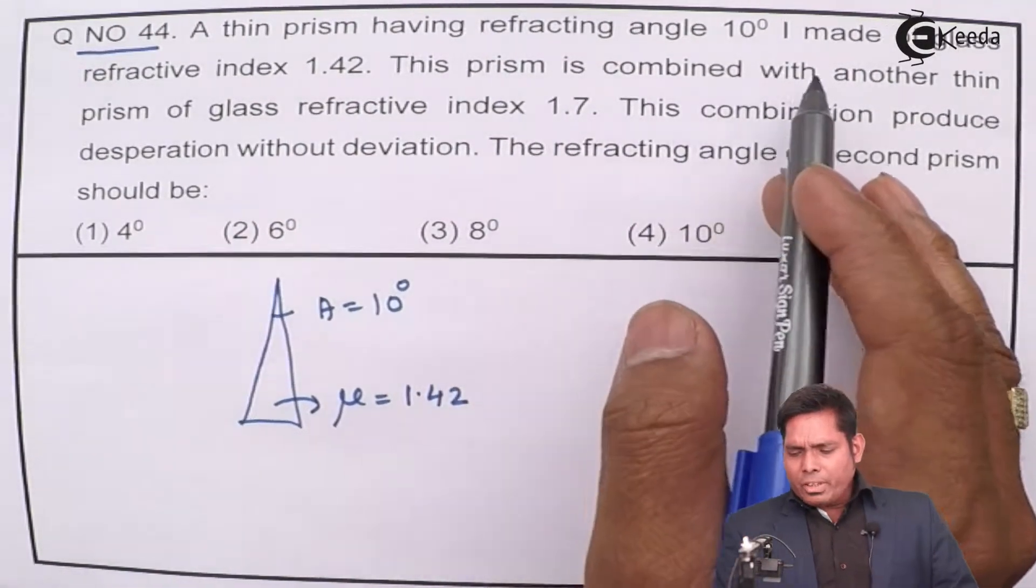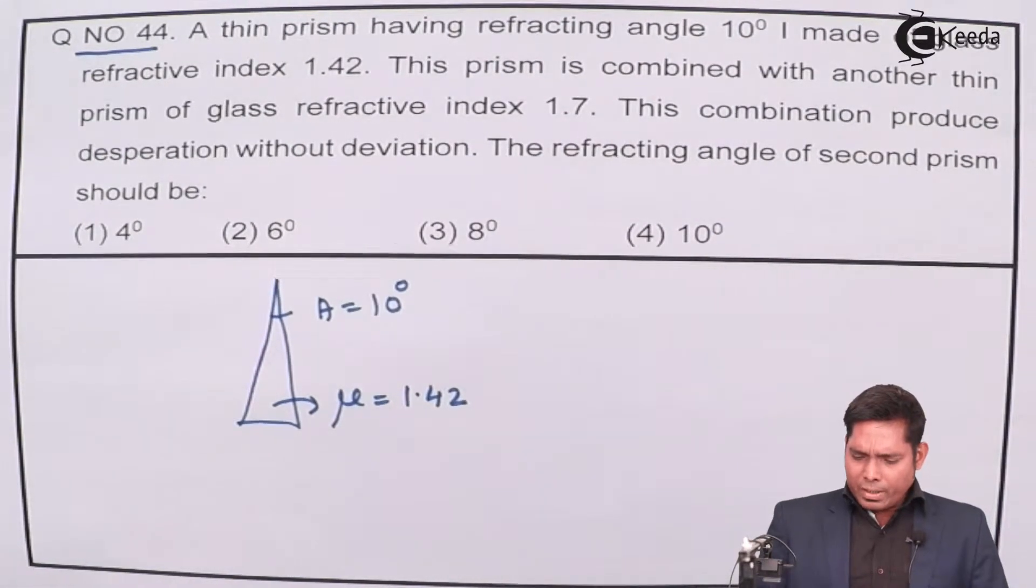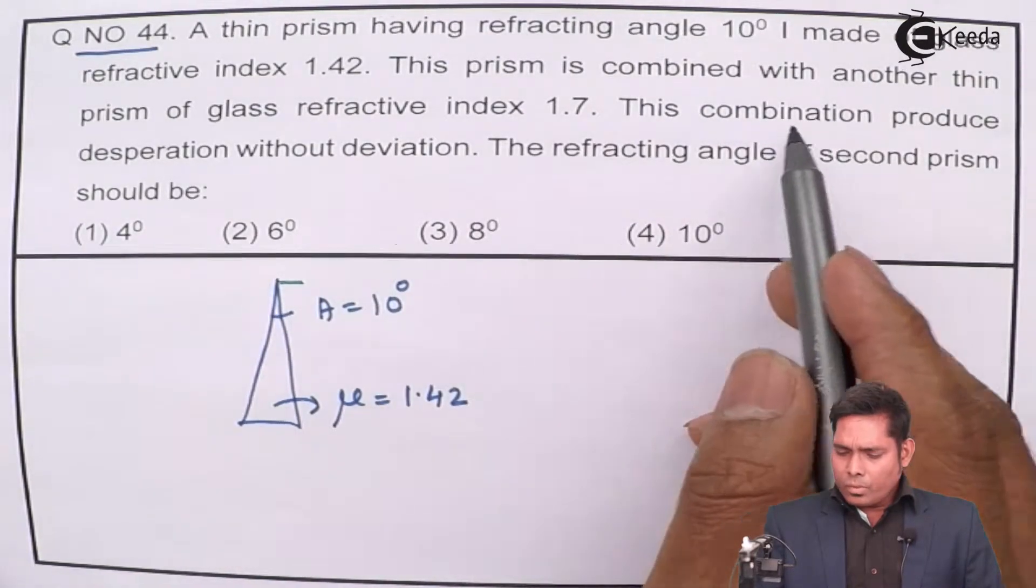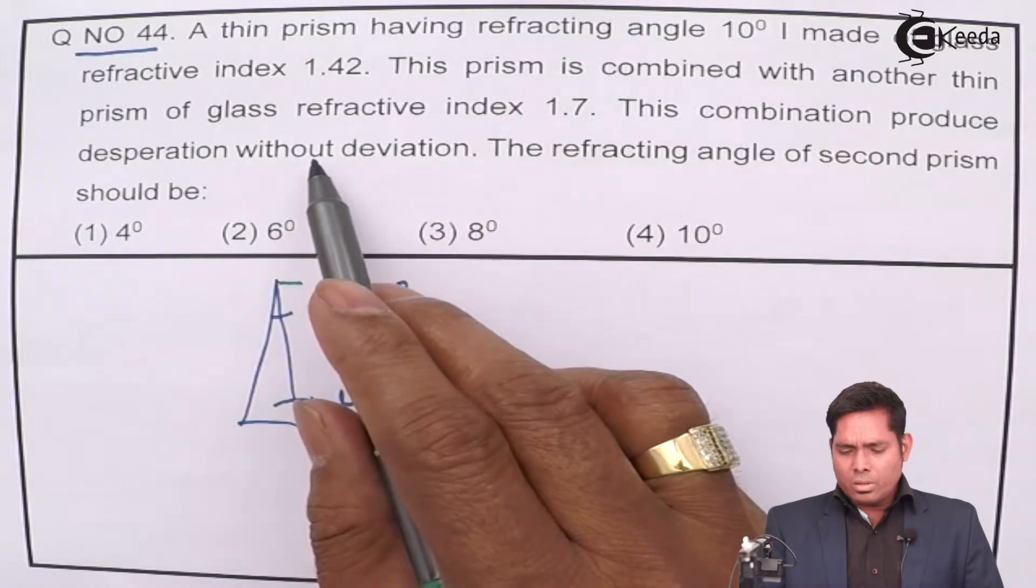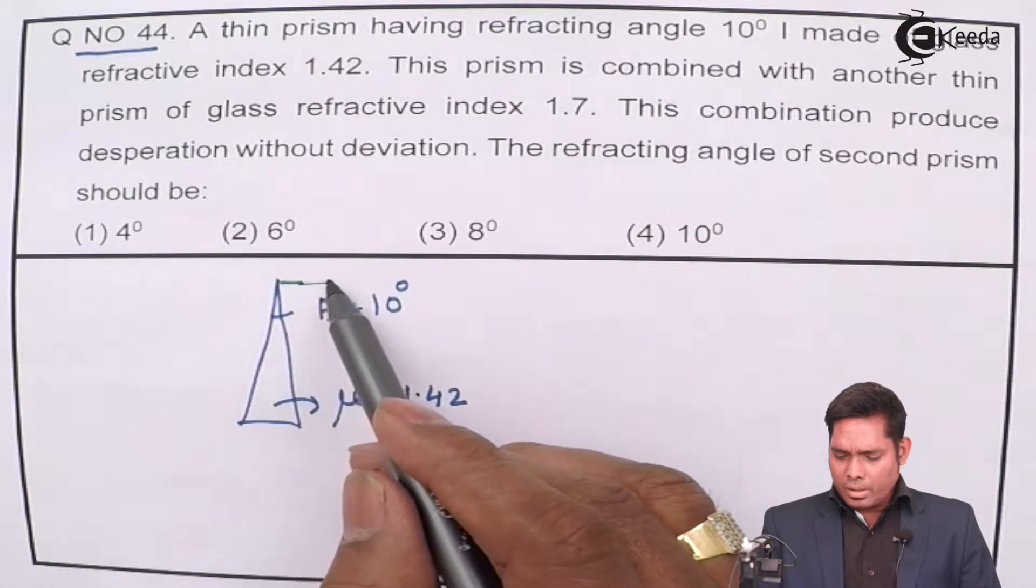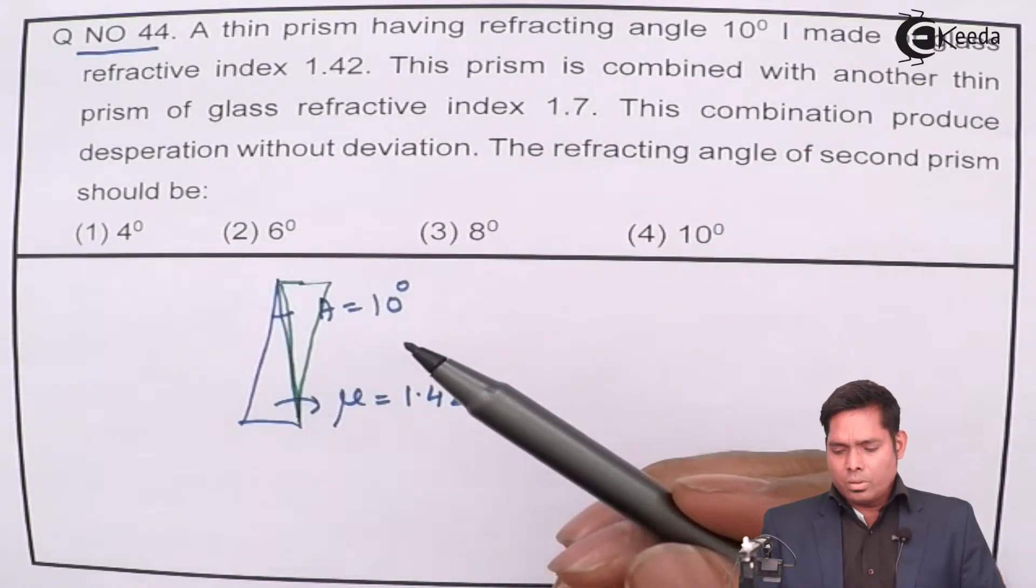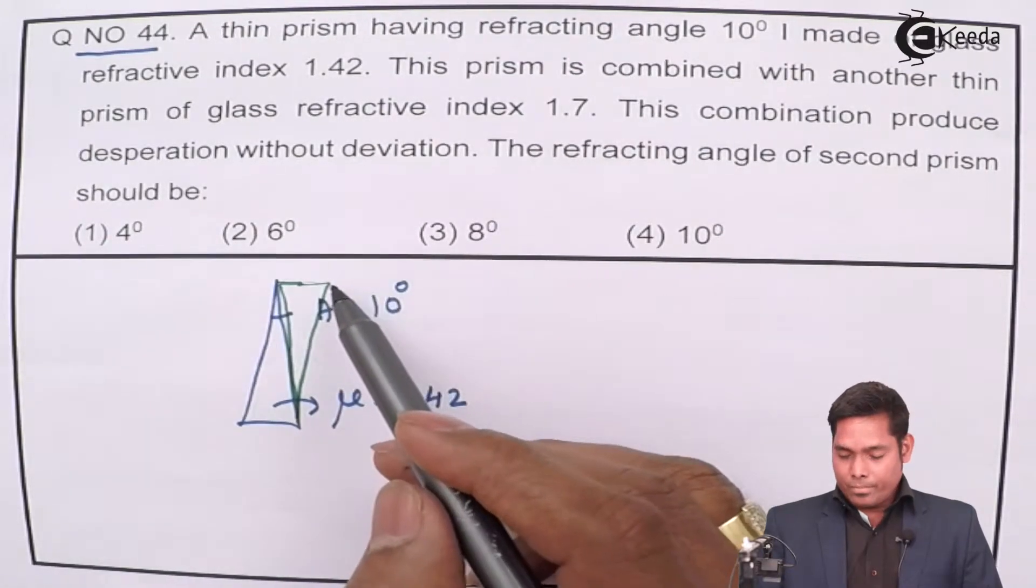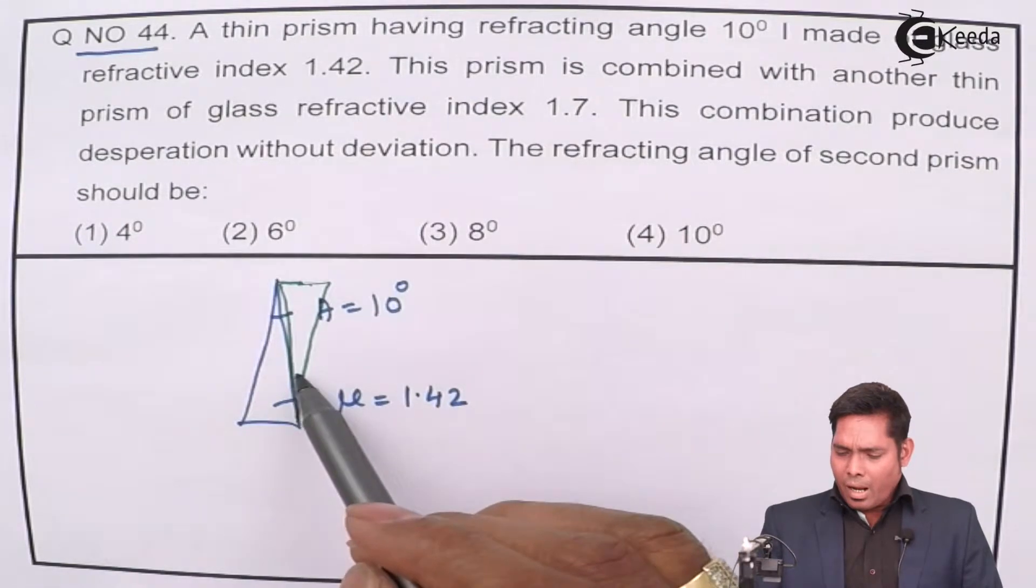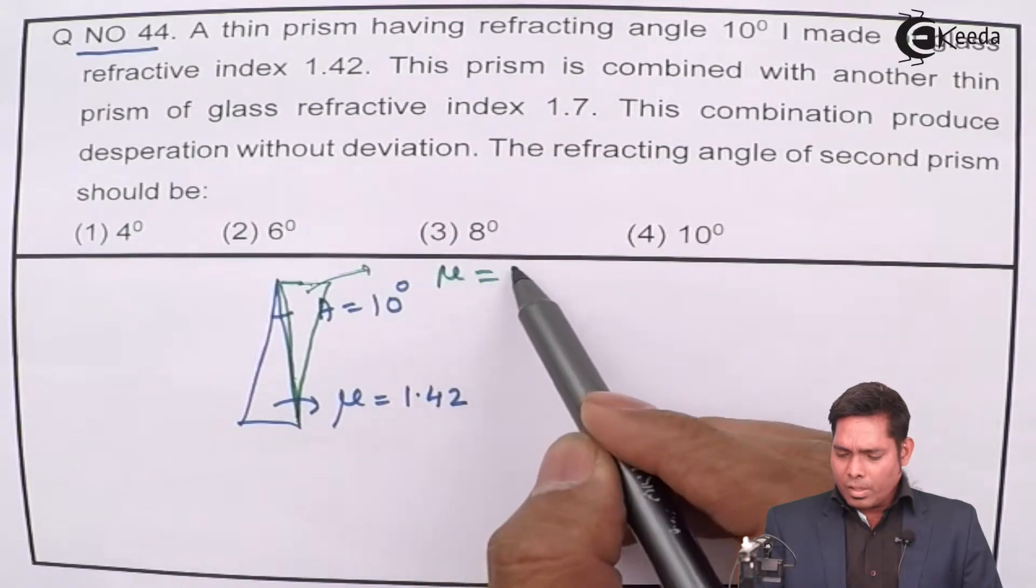This prism is combined with another thin prism of refractive index 1.7 to produce dispersion without deviation. I will connect another one inverted, having refractive index 1.7.